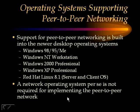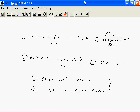Let us summarize the operating systems that could be used for setting up a peer-to-peer network. These include Windows 98, Windows 95, NT Workstation, Windows 2000 Professional, and Windows XP. Red Hat Linux also has a client operating system version that can be used to set up a peer-to-peer network. This brings us to the end of this discussion on the peer-to-peer network functional architecture.